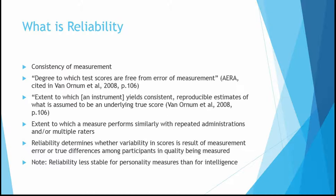One important note: reliability tends to be less stable for personality measures than for intelligence. Personality fluctuates a little based on how we're feeling on a given day — some days we're very nice, but every once in a while we have a grumpy day. That's going to fluctuate more than our intelligence, which really doesn't go up and down much from day to day.